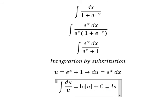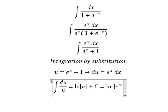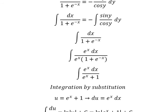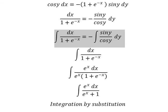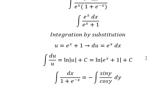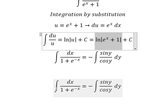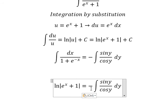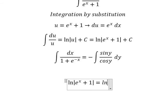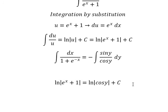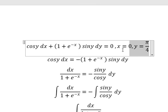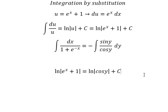Now for the left-hand side integral: the integration of (−sin y / cos y) gives us ln|cos y|, plus constant C. Now we apply the initial conditions: s = 0 and y = π/4.